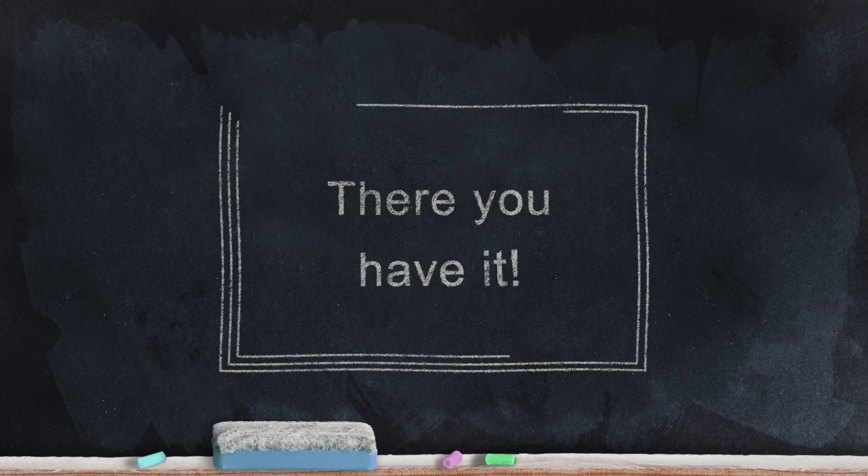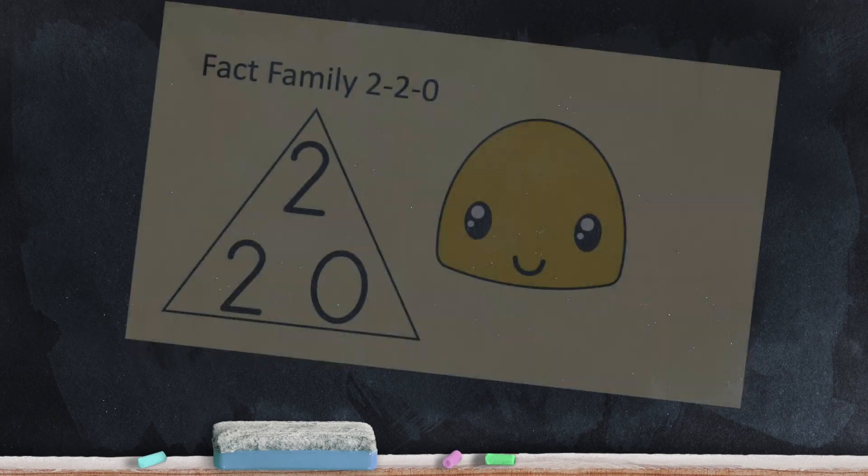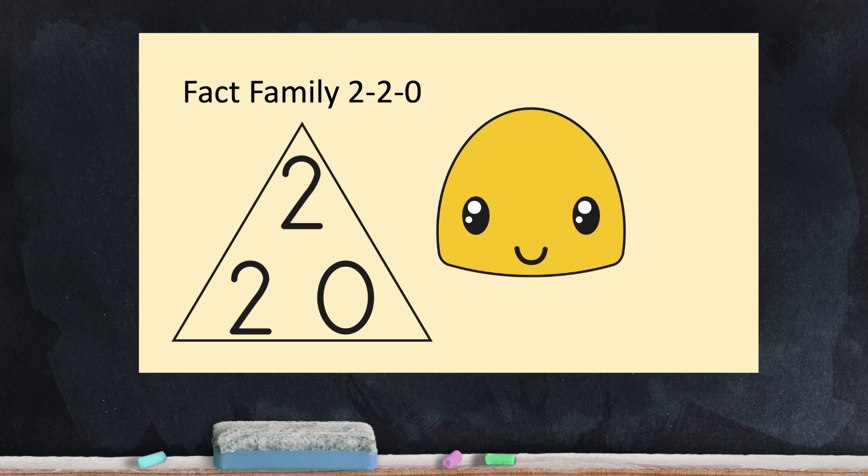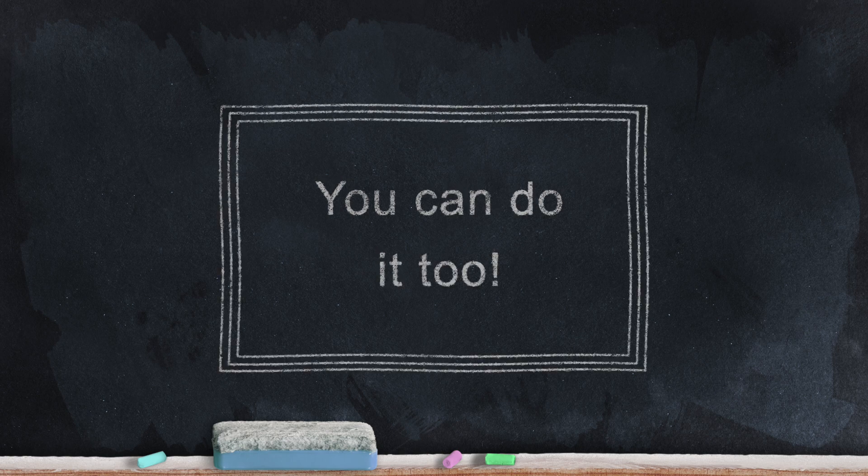And so there we have it. Emily Emoji found the facts for the fact family 2, 2, 0, and one property of addition and two properties of subtraction. You can do the same thing to figure out addition and subtraction facts on your own.